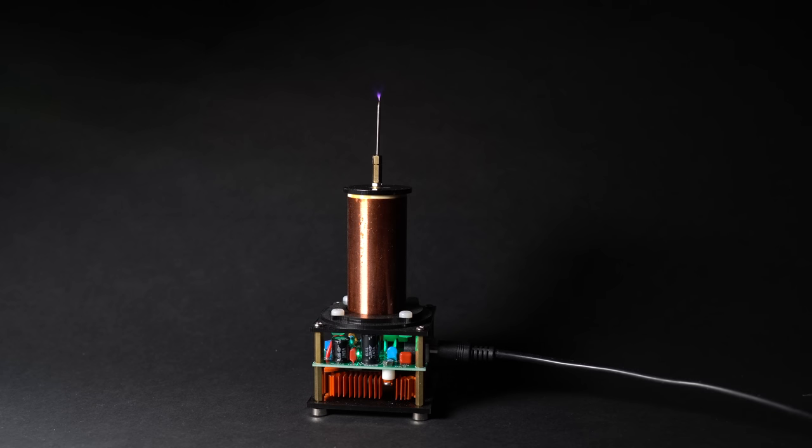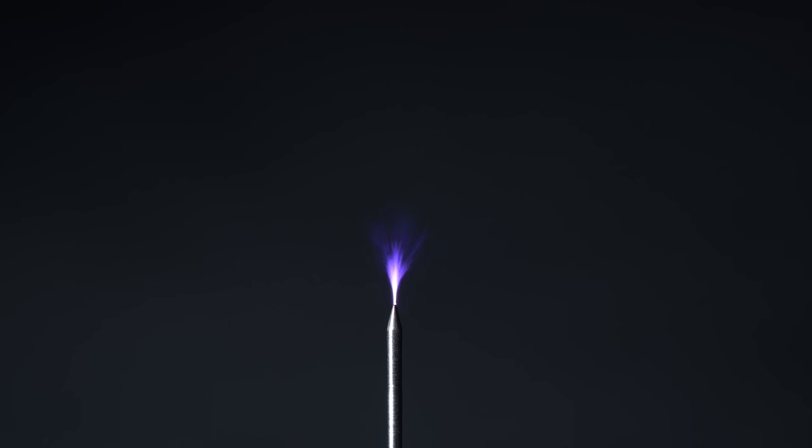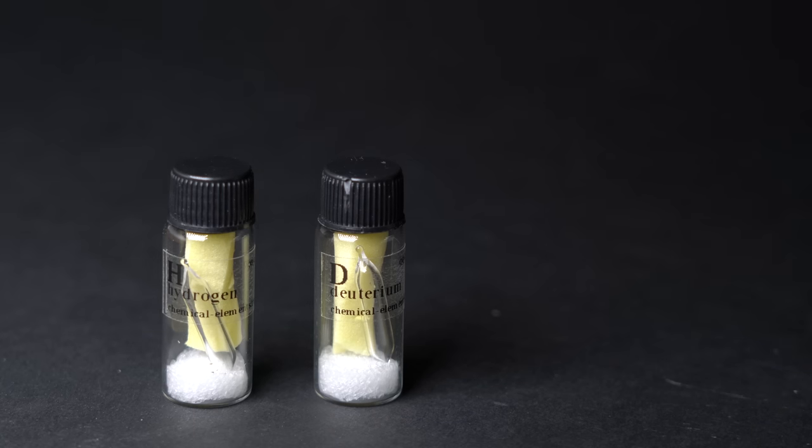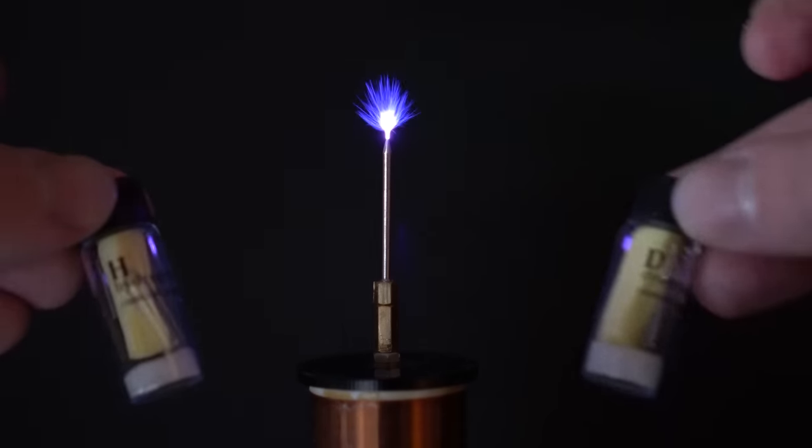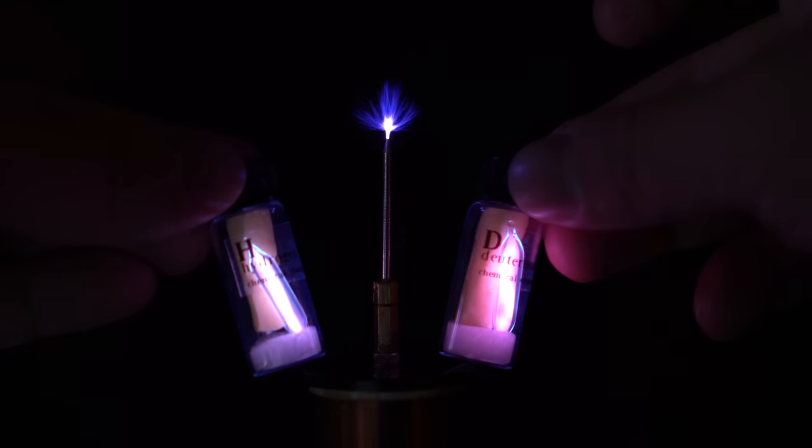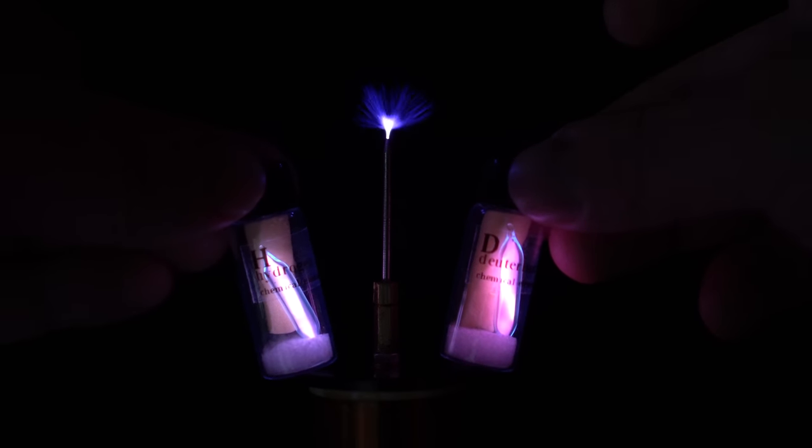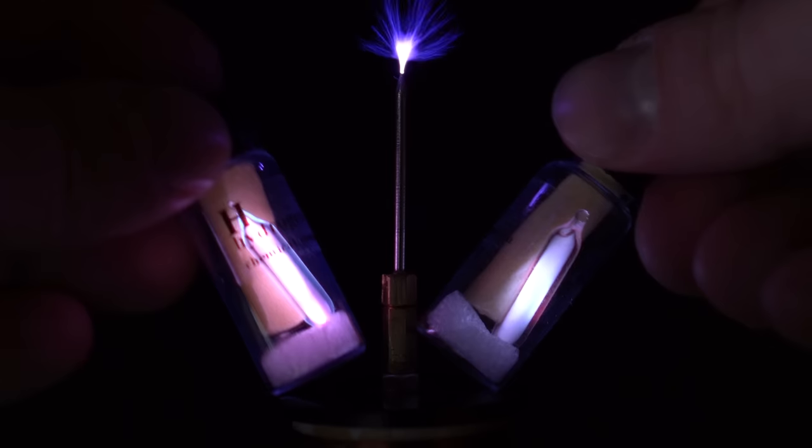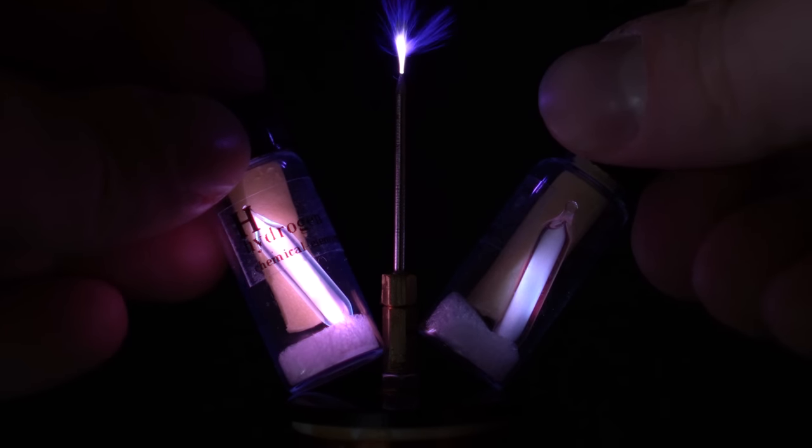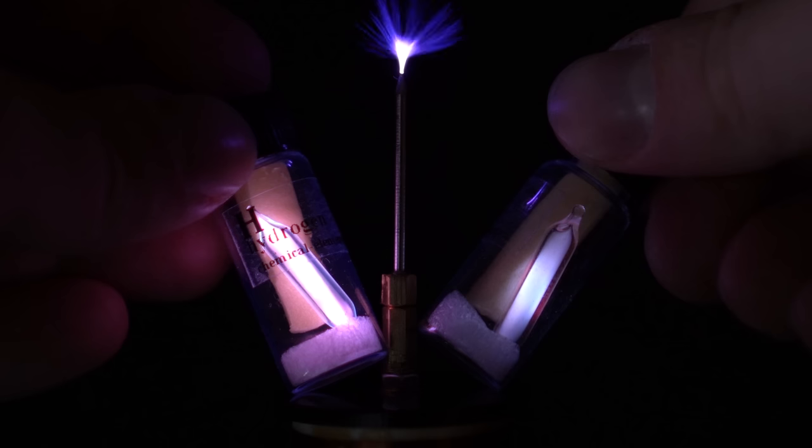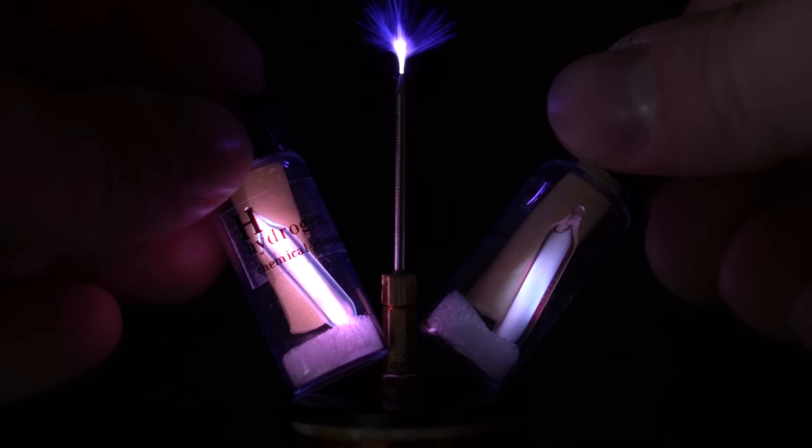And at the end of the video, I want to show you how all hydrogen isotopes behave under the influence of a strong electromagnetic field. Hydrogen, deuterium and tritium in these ampoules are under lower pressure, and when they are drawn close to a small Tesla coil, we can see a beautiful glow of these gases. It's worth noting that the heavier the atom is, the more violet glow its gas gives off in an ampoule.